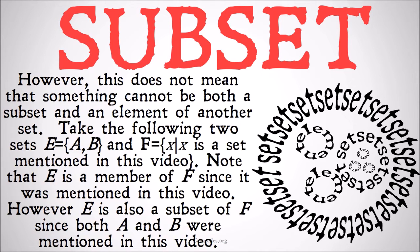Take the following two sets: E = {A, B}, and F = {X | X is a set mentioned in this video}. Note that E is a member of F since it was mentioned in this video. However, E is also a subset of F since both A and B were mentioned in this video. So something can be both a subset and an element, but it doesn't have to be. E is a member of F because we mentioned it in the video, and E is also a subset of F because all of the members of E — namely A and B — were mentioned in this video and so are members of F.